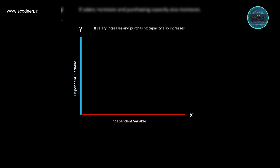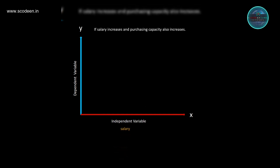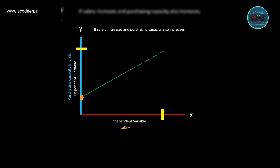Now let's understand the regression functions. The independent variable is age or salary, and the dependent variable is purchasing capacity. If salary increases and purchasing capacity also increases, it creates a positive relationship — that is, a positive slope.